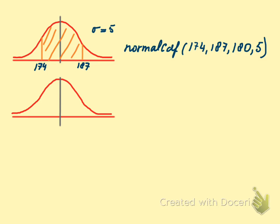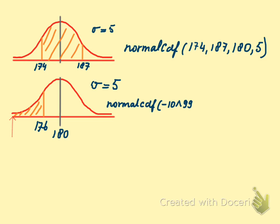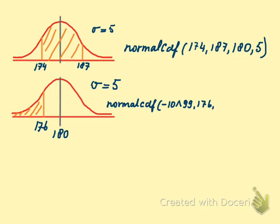Second example. Again mean 180, standard deviation 5. We take now 176, and the question is: what's the chance you are below 176? Again normalCDF. The left line is not zero but a huge negative number — that's minus 10 to the 99th. The second number is 176, the third number is the average — 180 — and then 5. Enter and you know what the chance is.